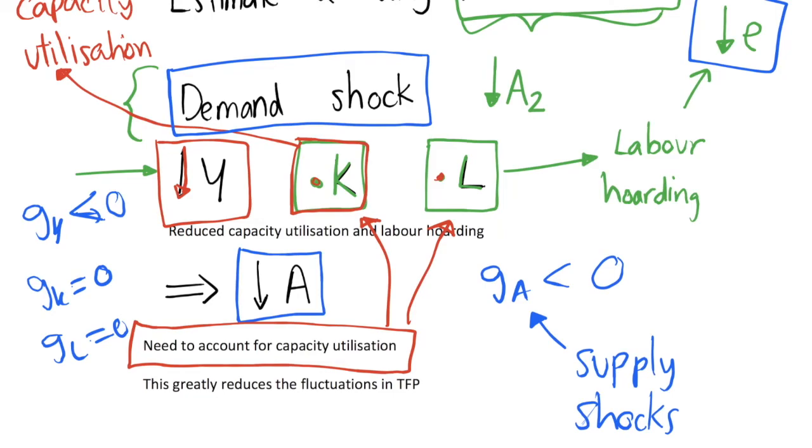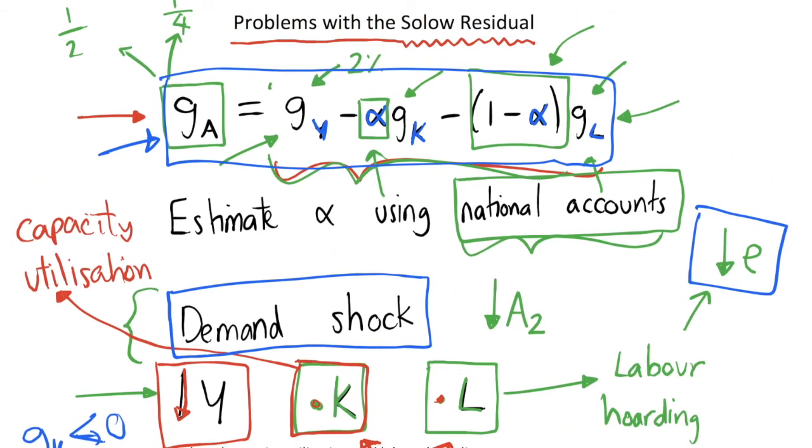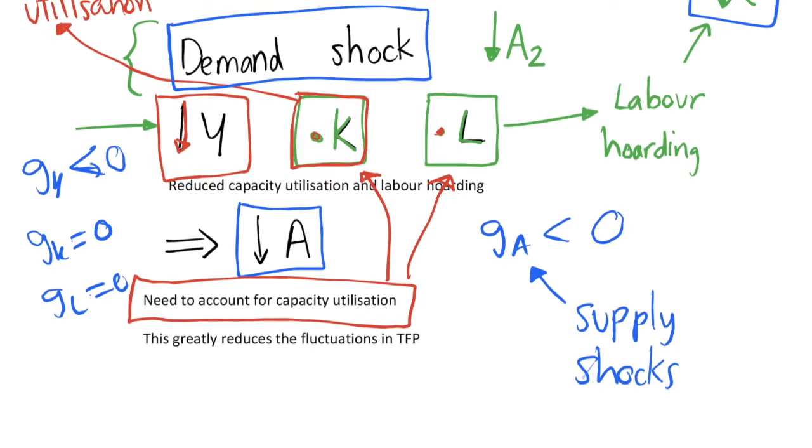But in fact it doesn't adjust our Solow residual because, as I've defined it, this is the Solow residual—this GA in terms of this form. So when we start adjusting it for capacity utilization, it's no longer really the Solow residual. So this is the problem—the Solow residual itself isn't great. What is actually now used in most papers is not the Solow residual at all. We use an adjusted value that actually tries to measure increases in technology and increases in total factor productivity.